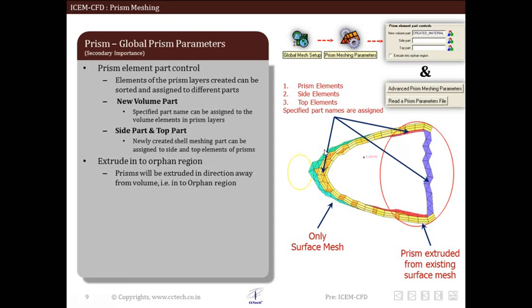Next parameter is extrude into orphan region. When this is enabled this option will extrude the prism layers away from the volume. This option is not used very often.